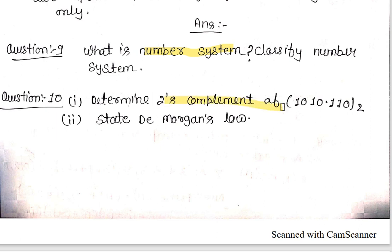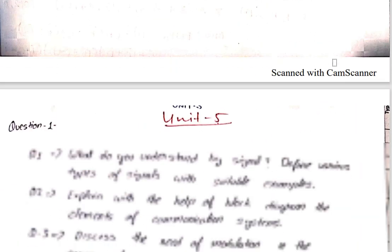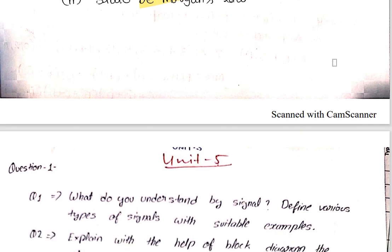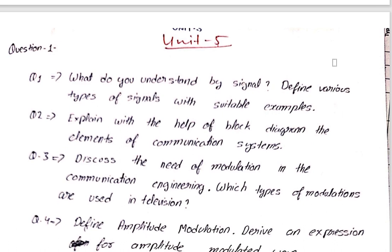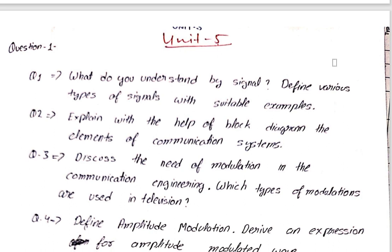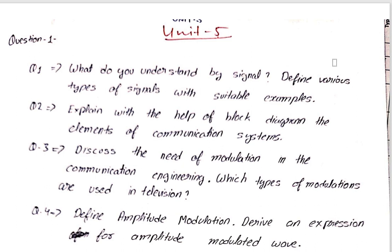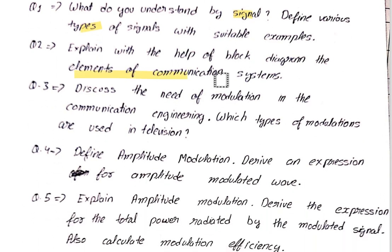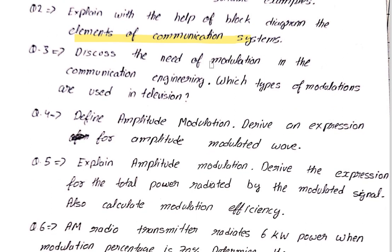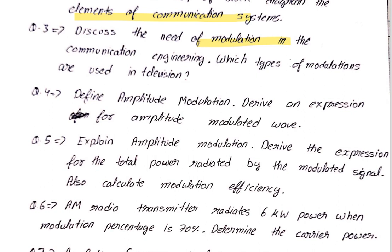Also study what a number system is. Now moving to Unit number five, which is also newly added — Fundamentals of Communication Engineering. This includes an introduction to wireless communication. This unit is very theory-based, and diagrams are very important in electronics — make diagrams neat. This sheet can also be downloaded from my Telegram channel.